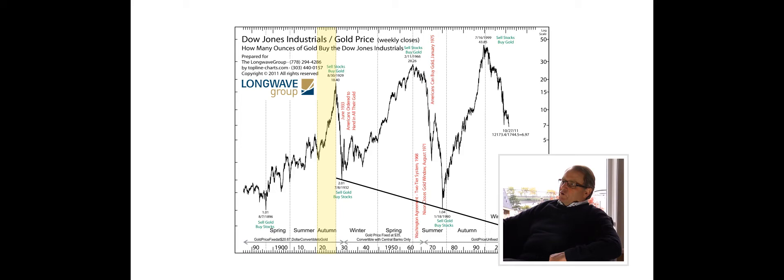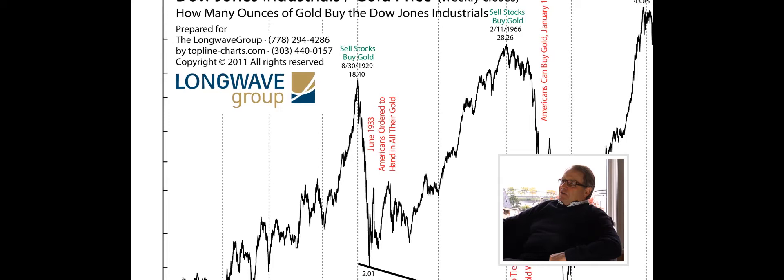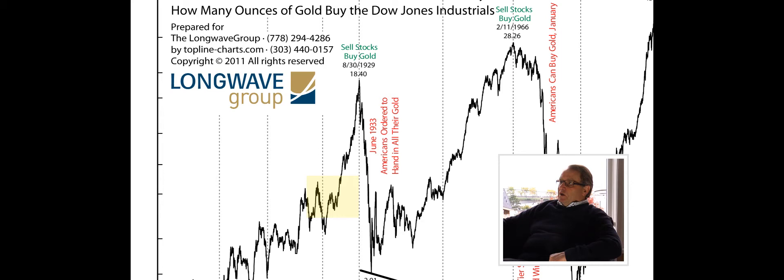And you can see that going back to the previous autumn cycle, and that of course is the 21-29 roaring 20s bull market, and you can see at that stage the gold price here is fixed at $20.67.